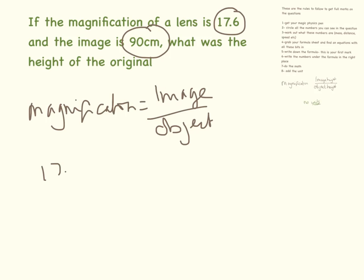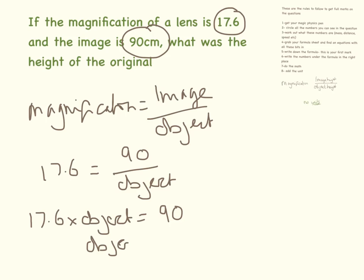So the magnification is 17.6, the image is 90cm tall, and we need to find the object. So I'll just take you through the long way of rearranging it. So 17.6 times the object equals 90. So the object equals 90 divided by 17.6. I will make a video on how to rearrange equations for you. 90 divided by 17.6 equals 5cm.